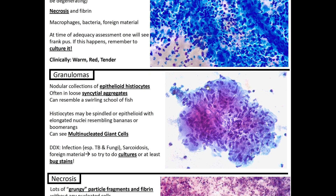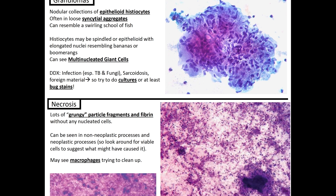You can also get granulomas. Certain entities associated with granulomas include TB, fungal infections, sarcoidosis, or foreign materials like sutures. A granuloma is a nodular collection of epithelioid histiocytes often in loose syncytial aggregates — they can resemble a swirling school of fish, as seen here. The histiocytes may be spindle-shaped or epithelioid with elongated nuclei resembling bananas or boomerangs.